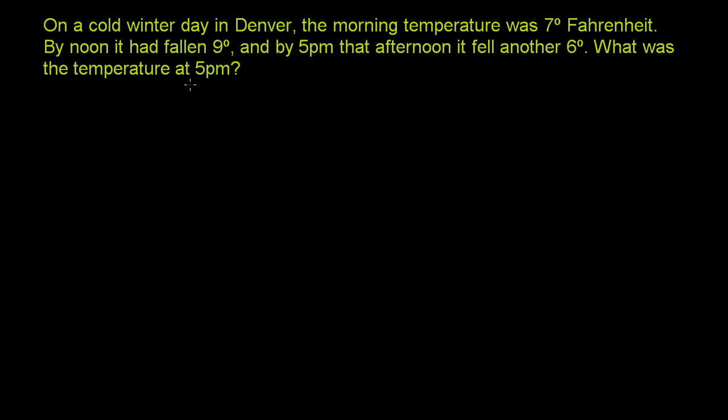What was the temperature at 5 p.m.? Let's draw a number line here to visualize what's going on. This is 0, or since we're talking about temperature, 0 degrees Fahrenheit. And we have 1, 2, 3, 4, 5, 6, 7. So in the morning the temperature was 7 degrees Fahrenheit, right over here.